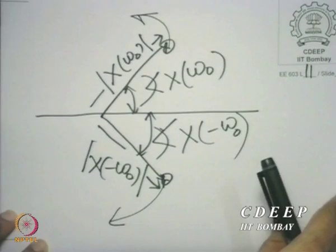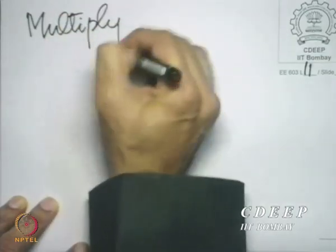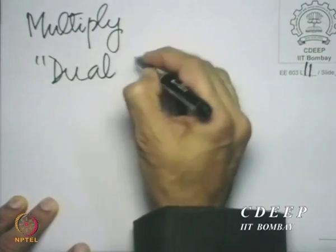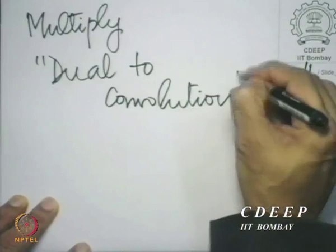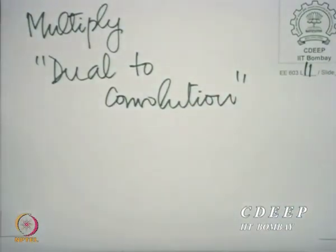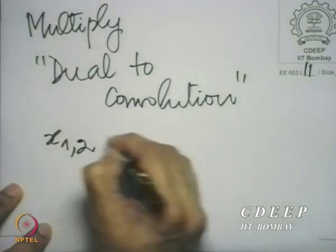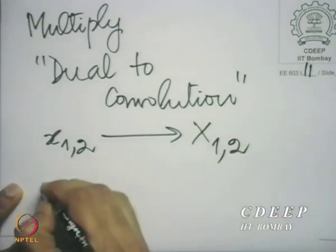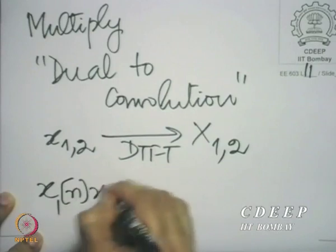Let us look at a few more properties of the discrete time Fourier transform. One important property is what happens when we multiply. That is, in some sense, dual to convolution. If x1 and x2 have DTFTs X1 and X2, what is the DTFT of x1(n) times x2(n)? That is the question we ask.